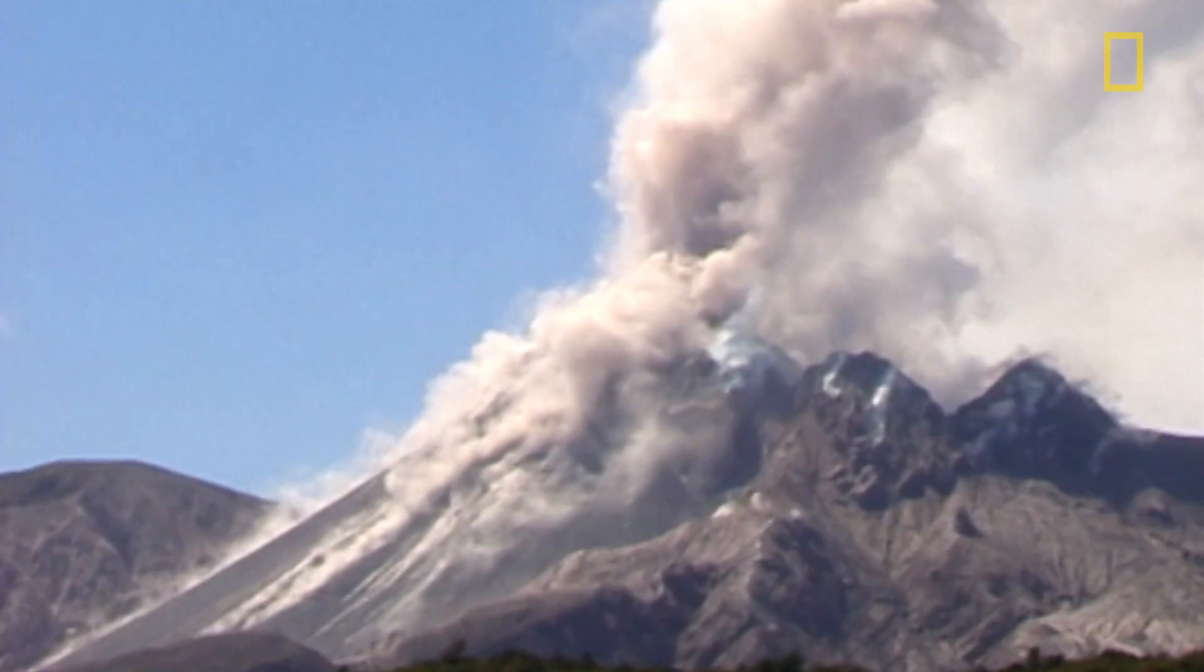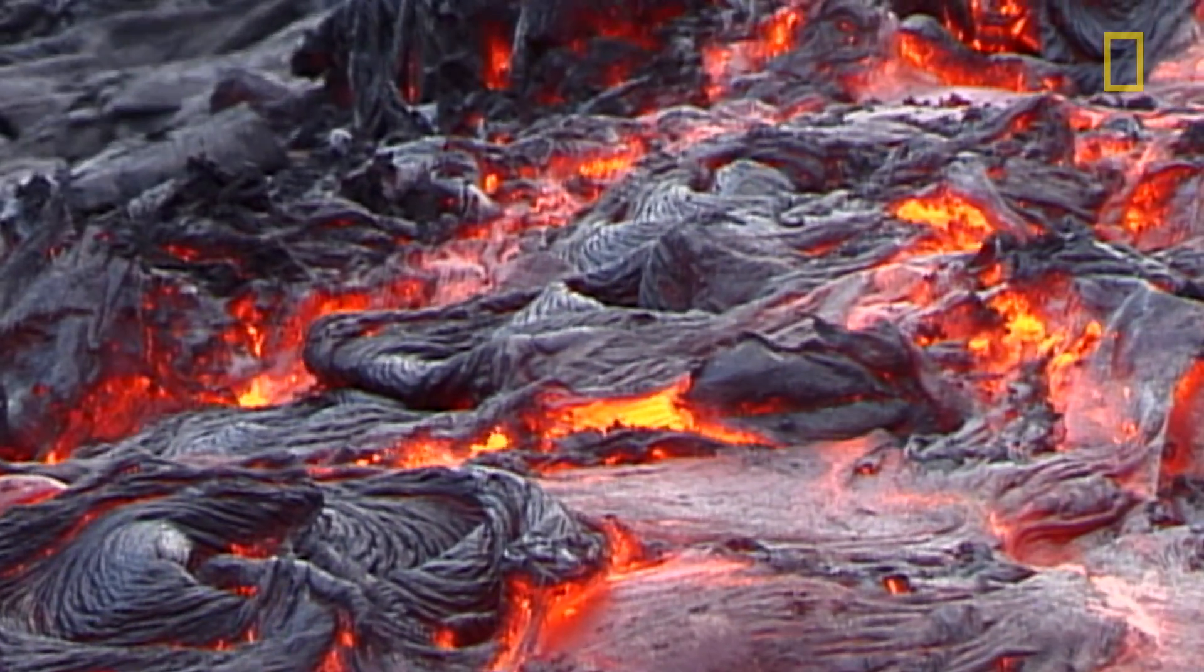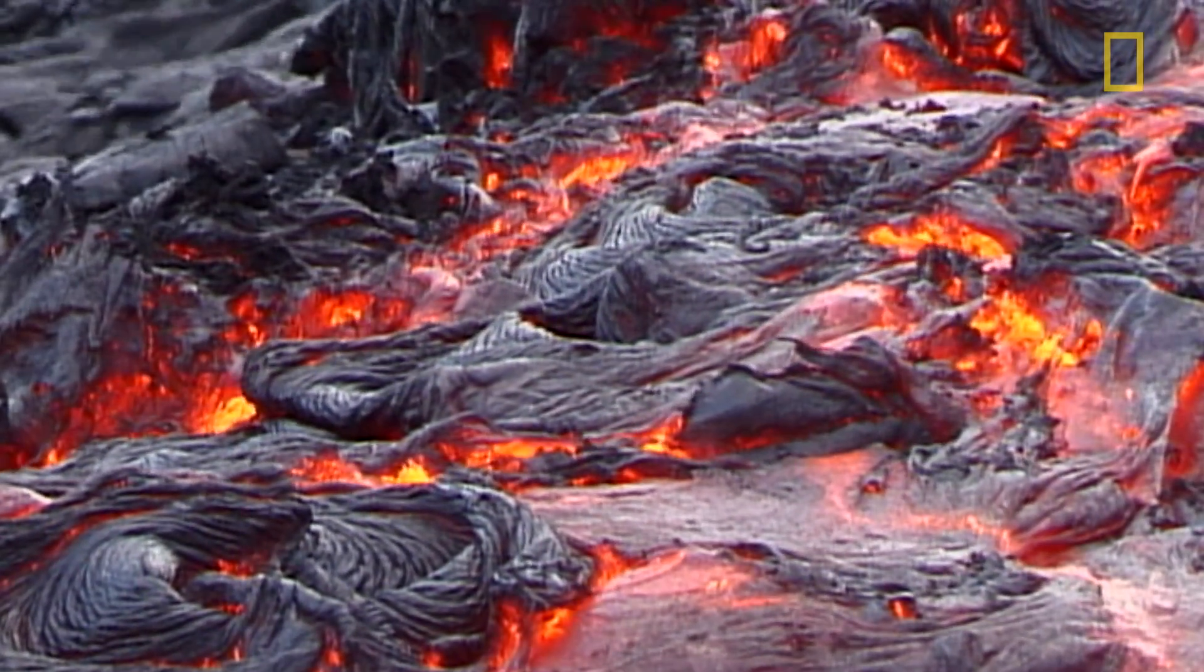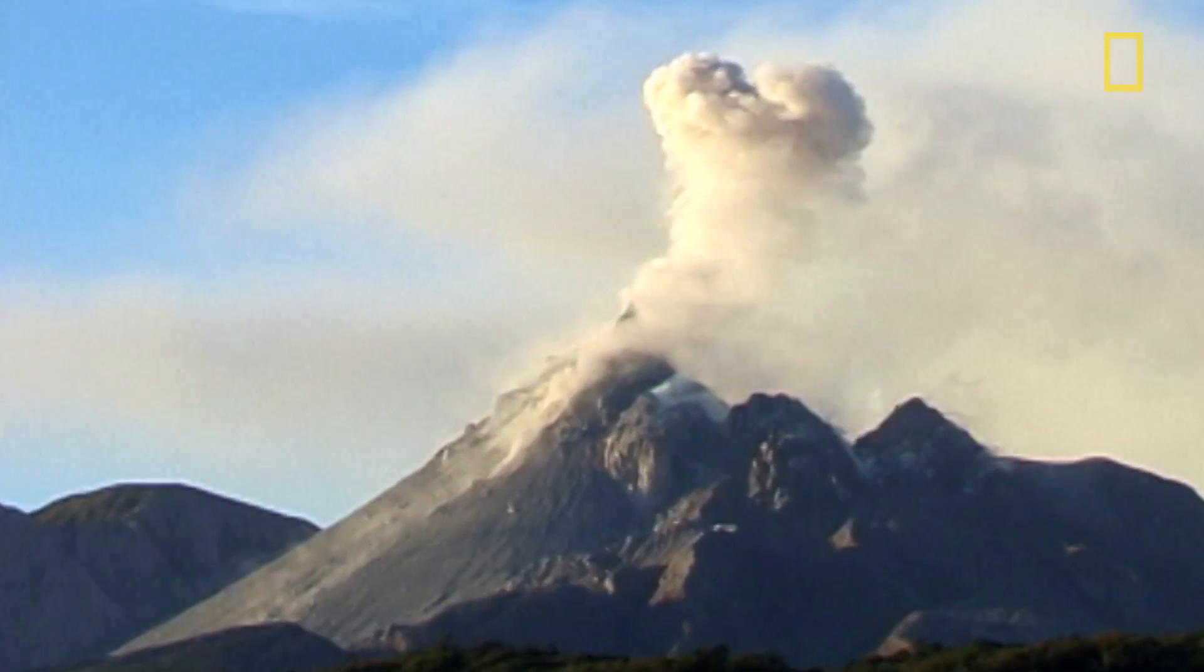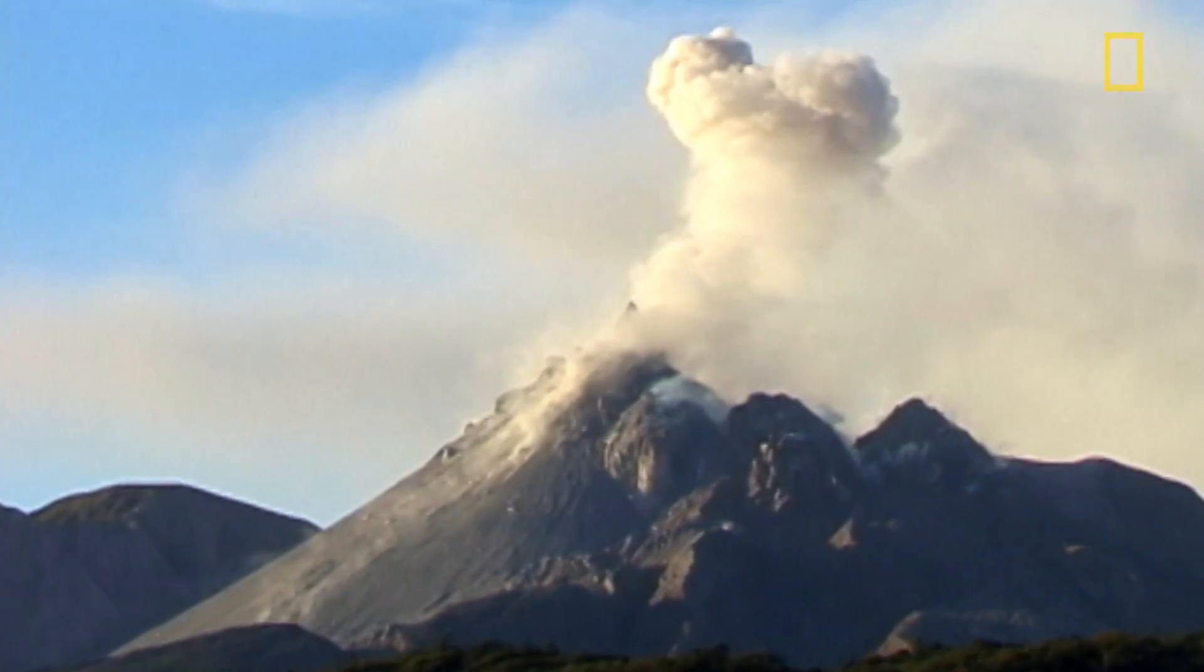Volcanologists describe volcanic rocks as lavas which erupt and flow out across the surface, and then there's pyroclastic rocks. A natural pyroclastic flow erupts from a volcano as a mixture of pumice and ash and gas that explodes upward as a cloud and then collapses to make a current.